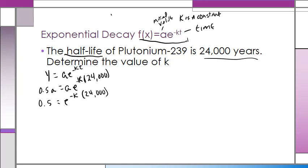Now, what could I do? Well, let's take the natural log of both sides to get rid of the E. So I've got LN 0.5 equals LN of E to the negative k times 24,000.